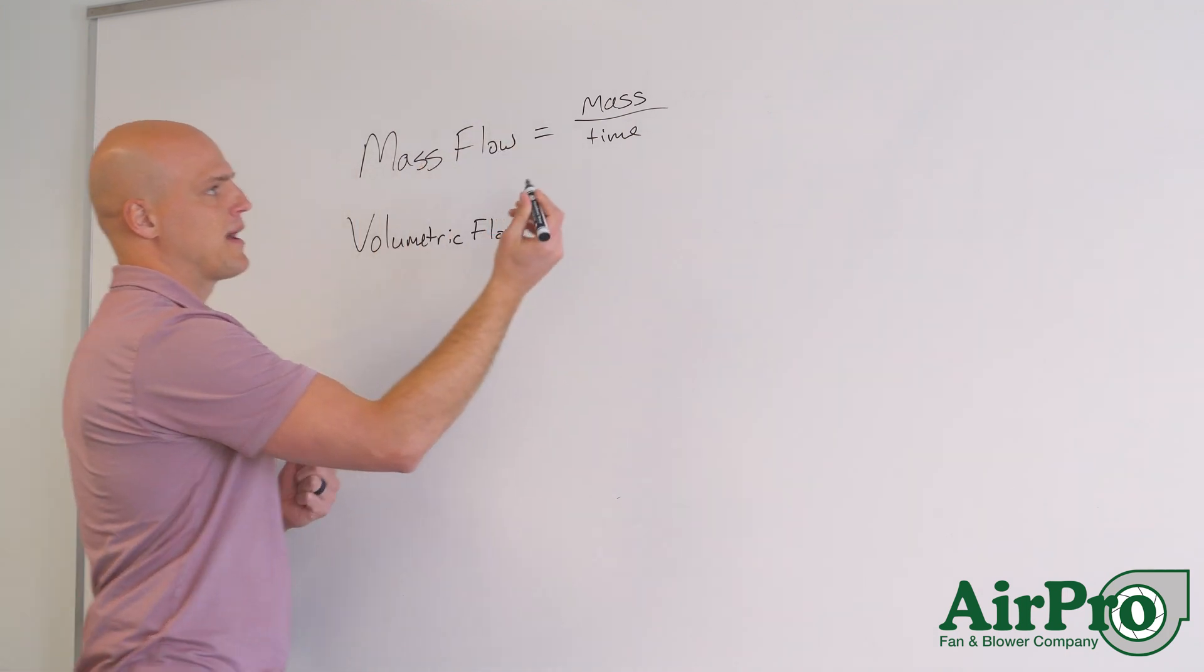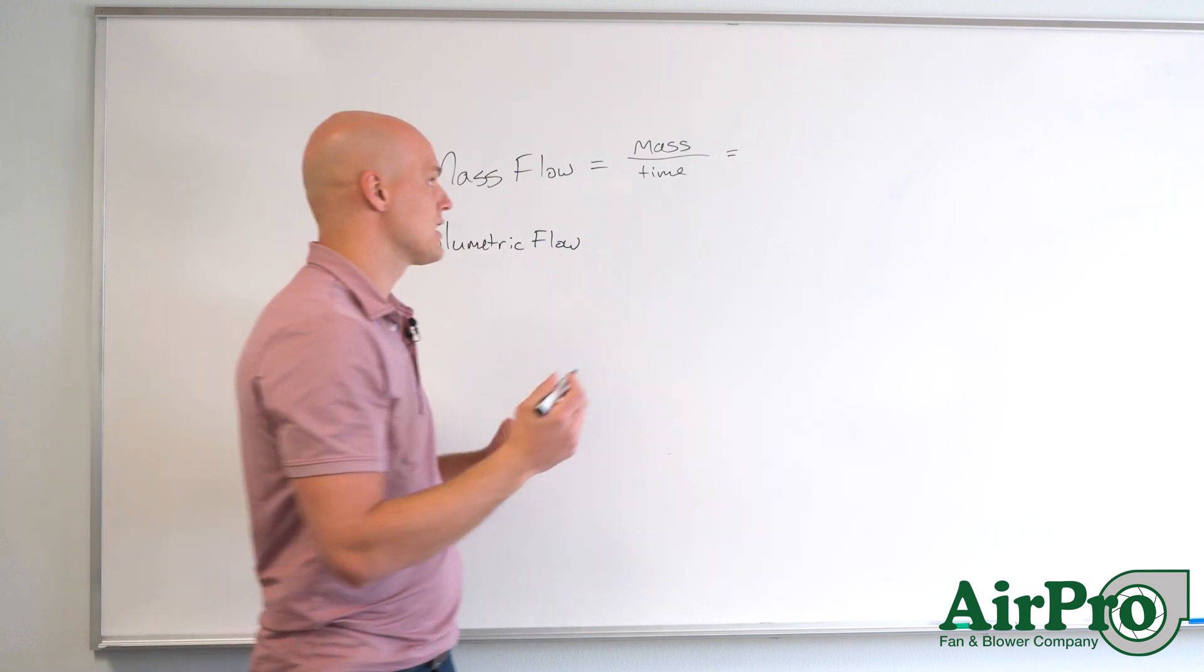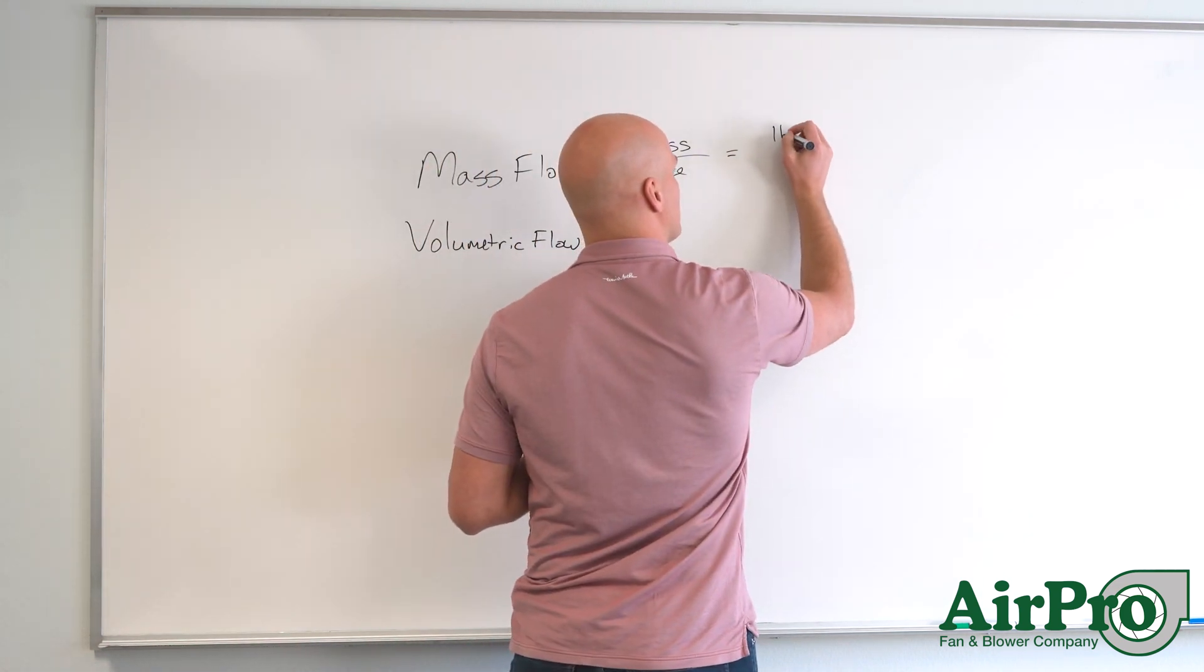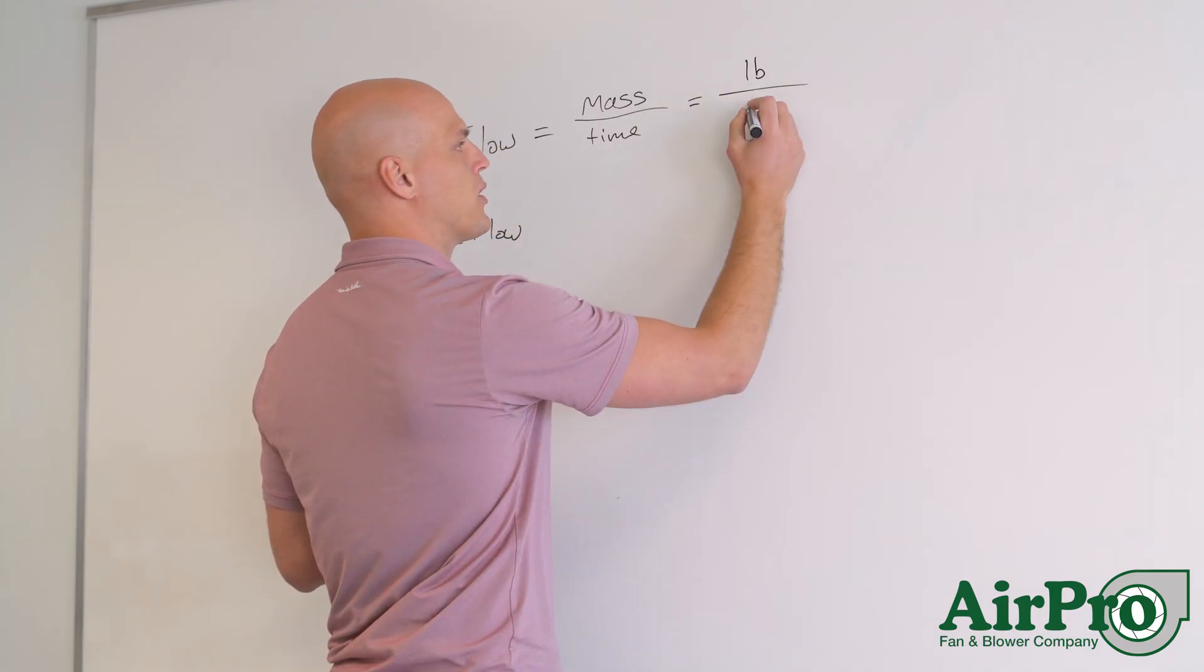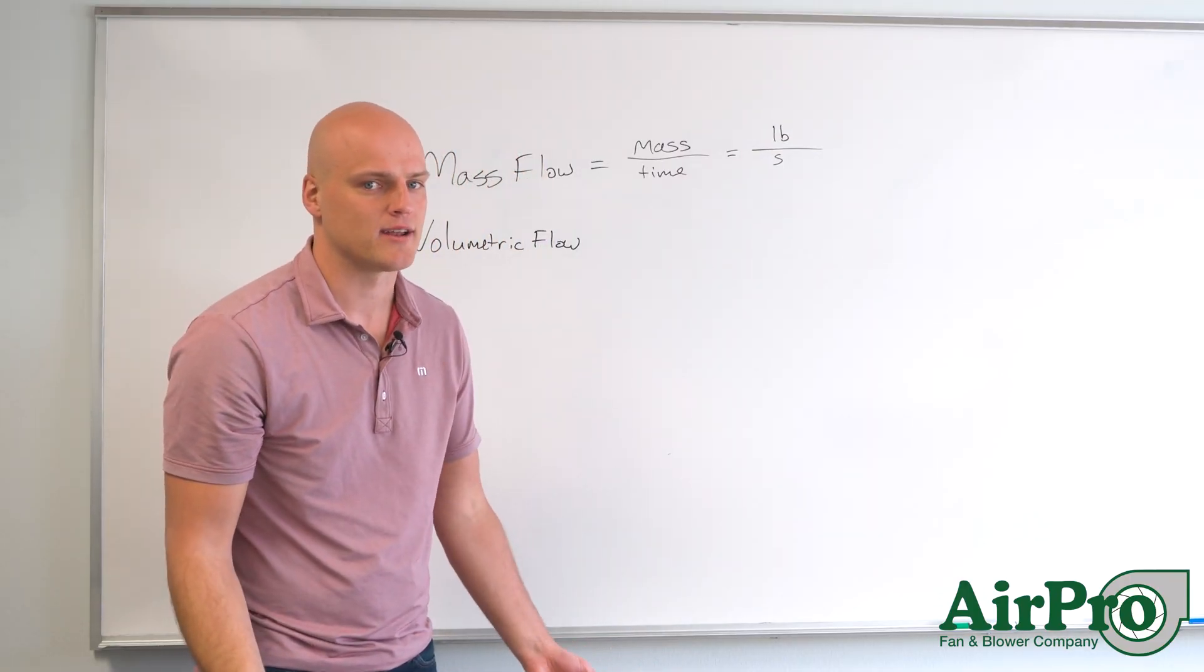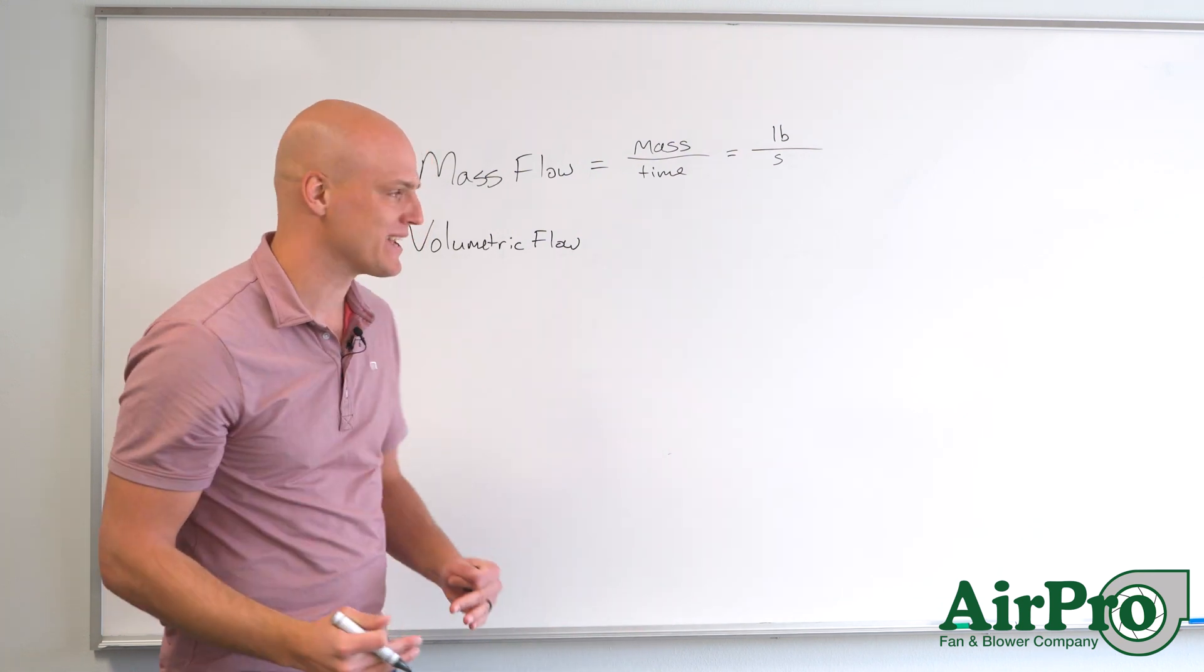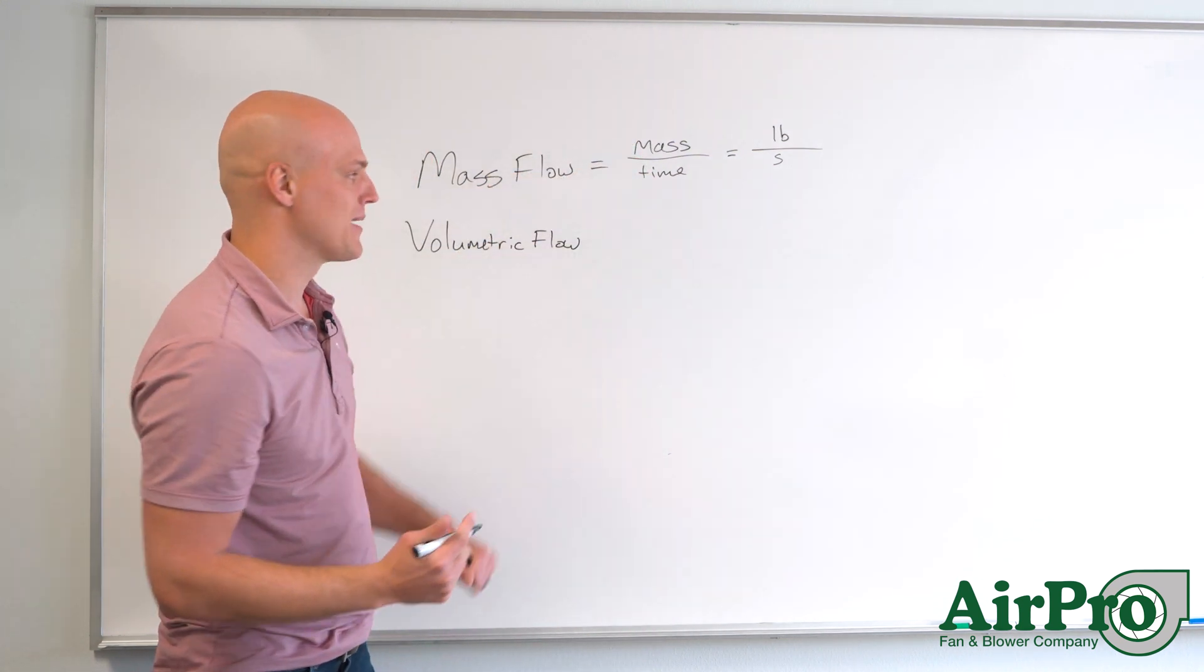And that gives us mass flow. In this case, the typical units used in the United States are pounds per second, pounds per minute, pounds per hour, kilograms per second if you're on metric, kilograms per minute. You're looking at mass over time.